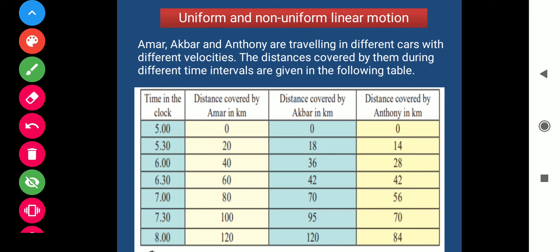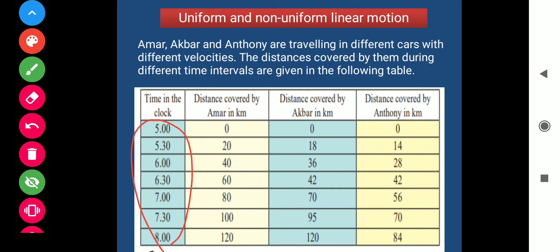Next, the distance covered by Anthony. In the first 30 minutes, the distance covered by Anthony is 0 to 14 kilometres. In the next 30 minutes, 14 to 28 kilometres — again a difference of 14 kilometres. In every 30 minutes, the distance covered by Anthony is 14 kilometres. So Anthony also covers equal distance in equal time interval.